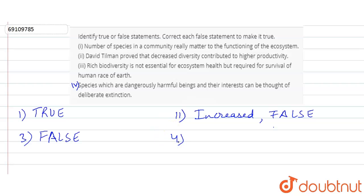Fourth, species which are dangerously harmful to beings and their interests can be thought of for deliberate extinction. This is true. Deliberate extinction means that we are deliberately making them extinct because they are very dangerous and harmful to our survival. So we can think of deliberate actions to make them extinct, which is true. So these are our true and false statements.